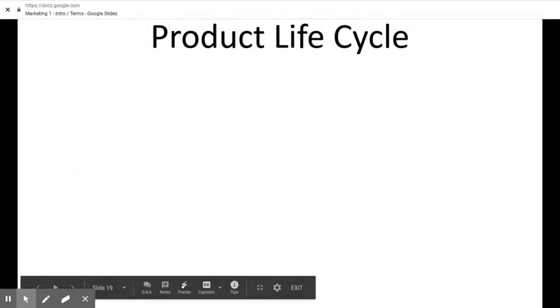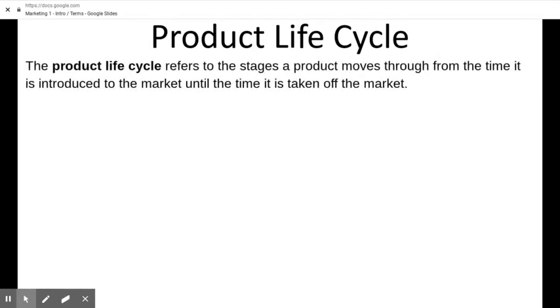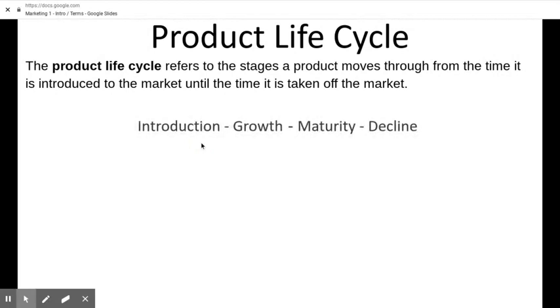Product life cycle refers to the stages a product moves through from the time it is introduced to the market until the time it is taken off the market. Some products have been around for a very long time, while others don't last as long, so their life cycle is shorter. But they all go through very similar stages: introduction, growth, maturity, and decline.